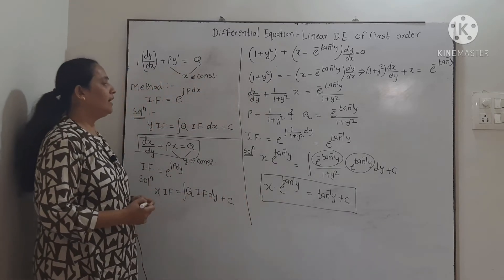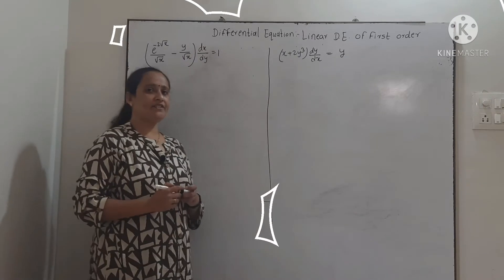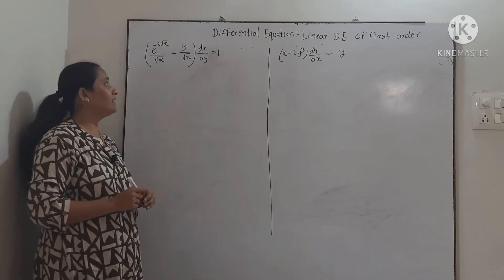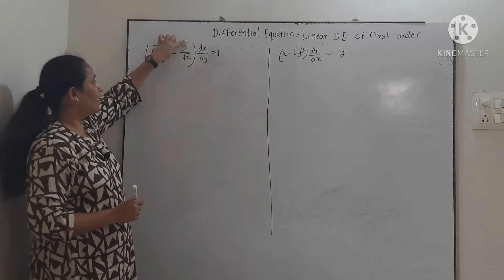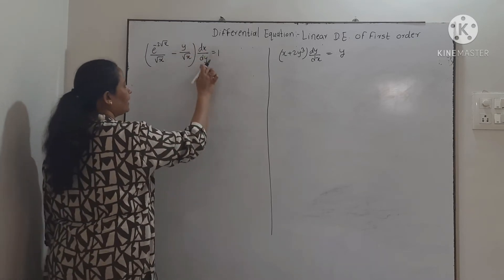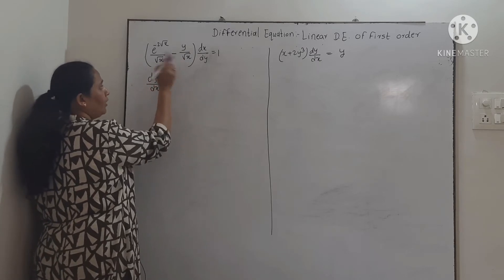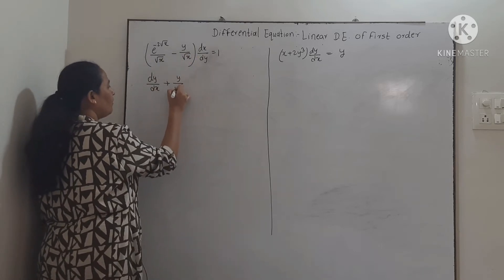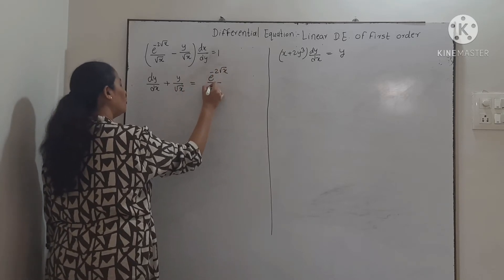This is the procedure to solve a linear differential equation. We will take one more example. Consider e^(−2√x)/√x − y/√x · dx/dy = 1. Observing this, the highest power of y is 1, so we convert it into linear in y. Transferring terms and rearranging: dy/dx + y/√x = e^(−2√x)/√x.